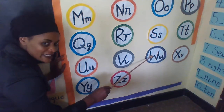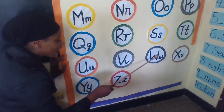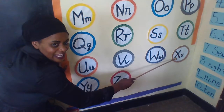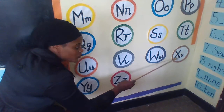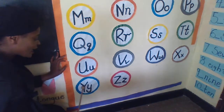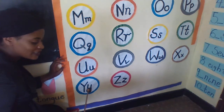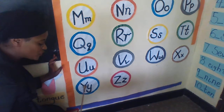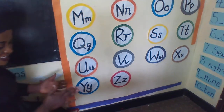Capital letter W, small letter O. Can you read after me? Capital letter W, small letter O. Capital letter X, small letter X. Capital letter X, small letter X. Capital letter Y, small letter U. Can you read after me? Capital letter Y, small letter U. Capital letter Z, small letter Z.